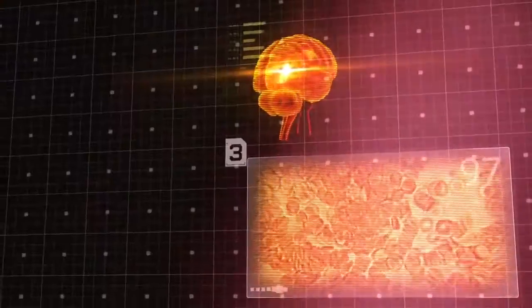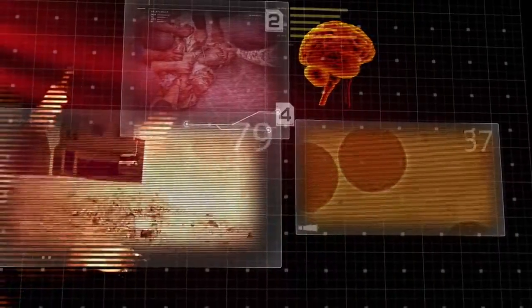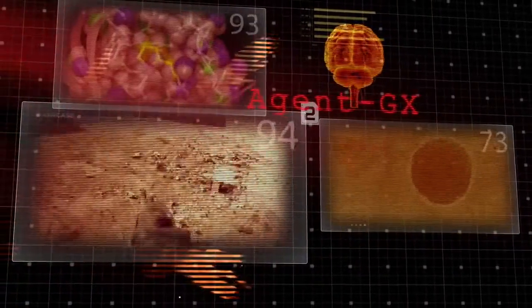What the public didn't know was that Stargate Project was actually successful. Having located secret nuclear test sites of the Soviet Union, the success was due to a drug called Agent GX.